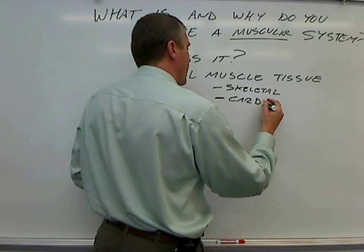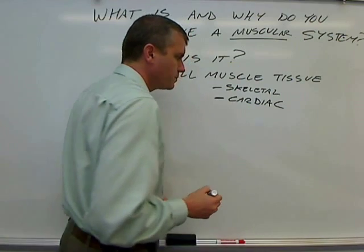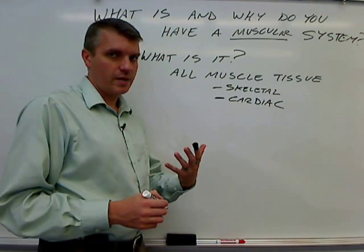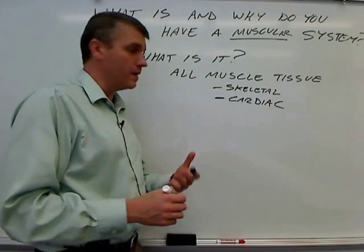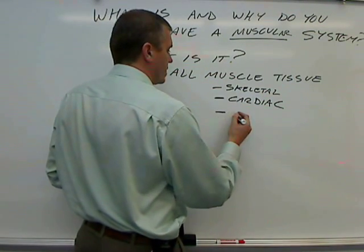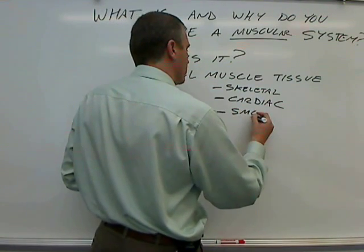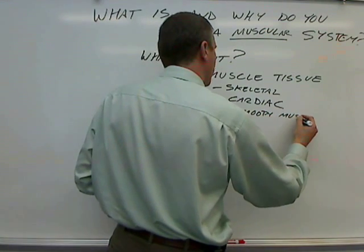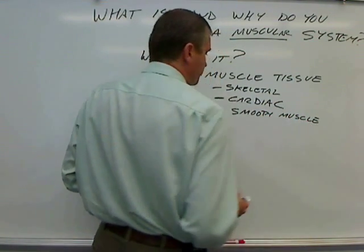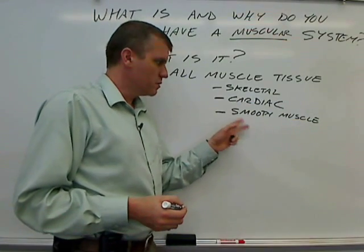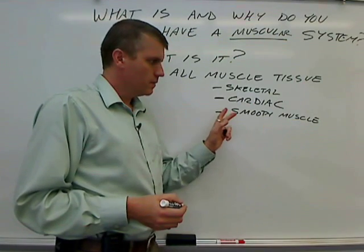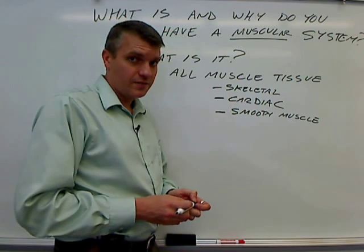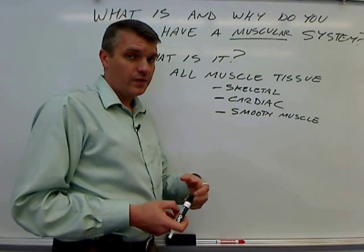Another tissue is cardiac muscle tissue. Cardiac muscle tissue is only found in the heart and its major job is to pump the blood. And then lastly, there's smooth muscle. The majority of smooth muscle is wrapped around tubed organs, such as the digestive tract and the blood vessels.